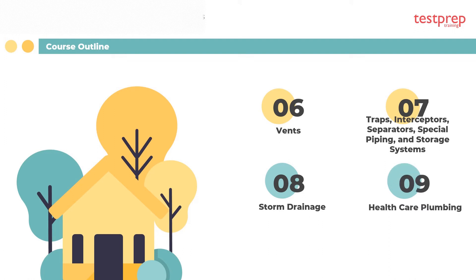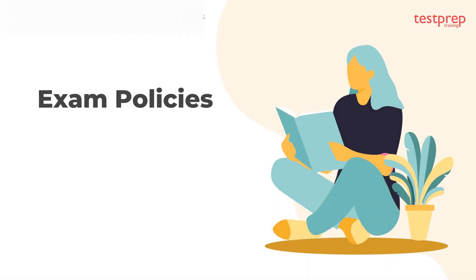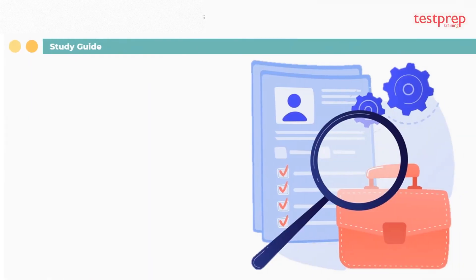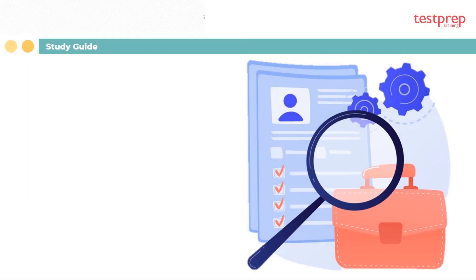Nine, healthcare plumbing. Exam policies: results for examinations taken online or at a testing site are available immediately after completion. For national and UST or AST certification exams, the candidate will have six exam attempts within a six-month period and is responsible for paying the exam fee at every attempt. Once they have attempted the exam six times, they must wait six months from the first attempt to register again.